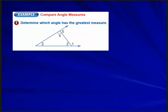Let's do some problems. Determine which angle has the greatest measure. Angle 1 is bigger than angles 4 or 3 because it's the exterior angle. Angles 4 and 5 are congruent to each other — both 90 degrees. Angle 1 is obtuse whereas angle 2 is acute, so angle 1 is bigger than angle 2 as well. The angle with the greatest measure is angle 1 — it's bigger than all the others.